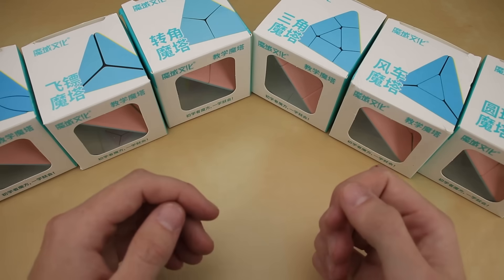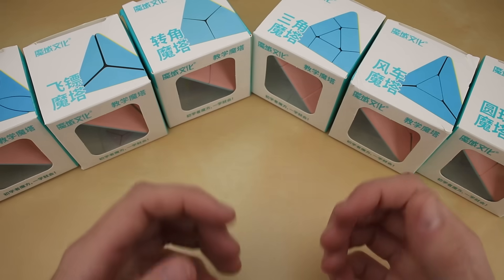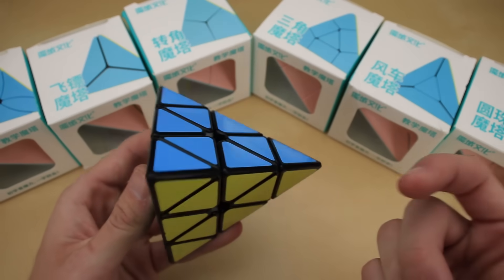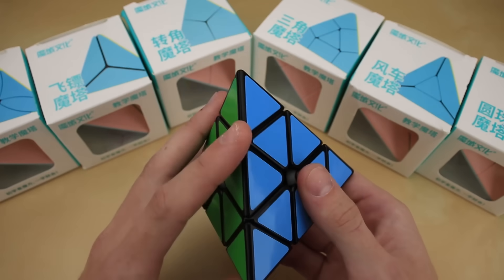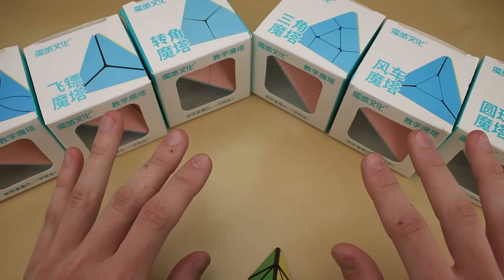So around a month back, MoYu, the speedcubing company, released this cool little collection of unique new twisty puzzles. They're all tetrahedron, so they're shaped like a Pyraminx, but of course the Pyraminx is the only pyramid-shaped puzzle in the World Cube Association, meaning that these are all non-WCA puzzles.